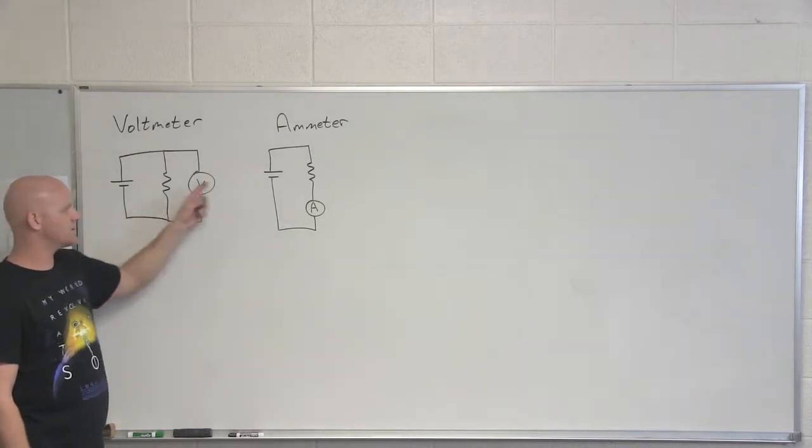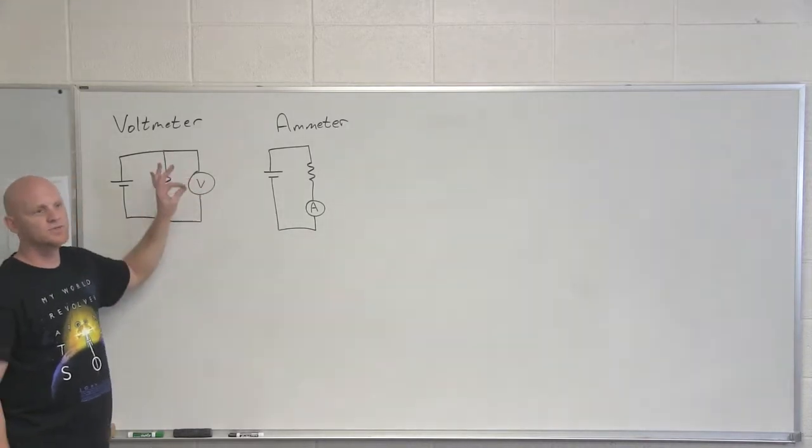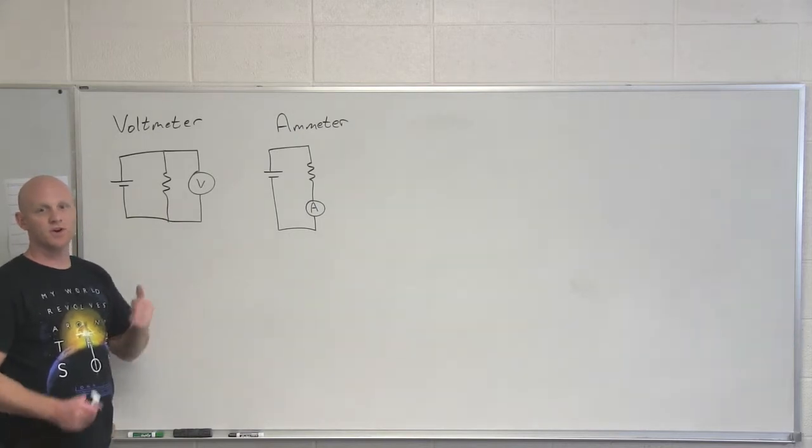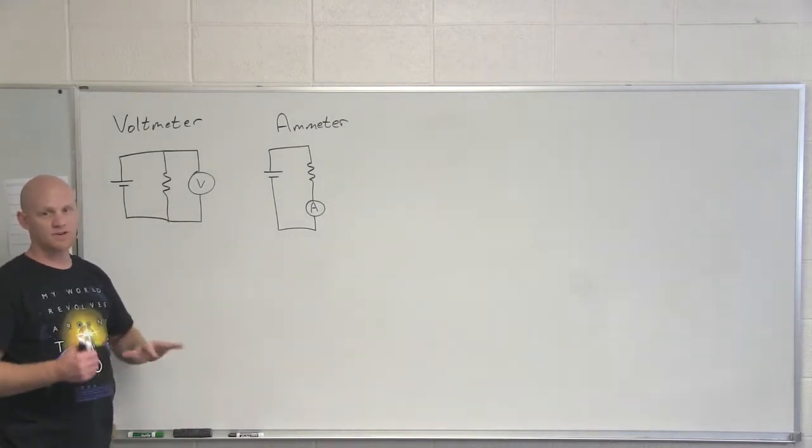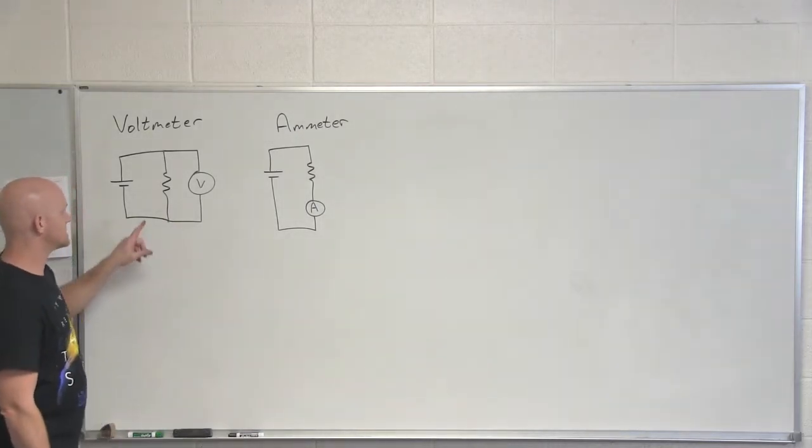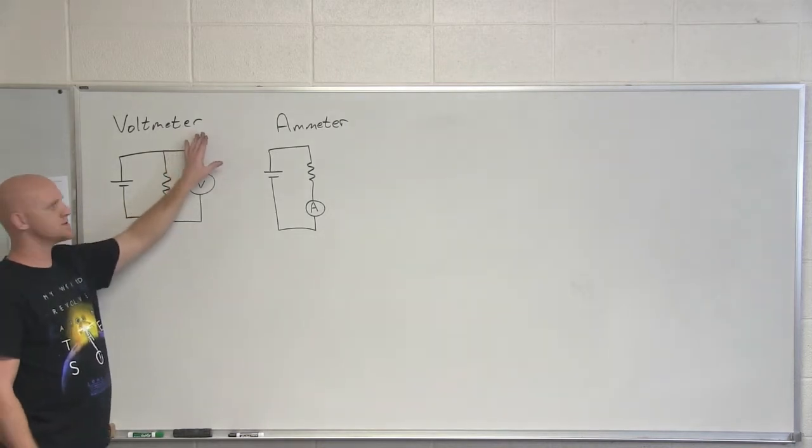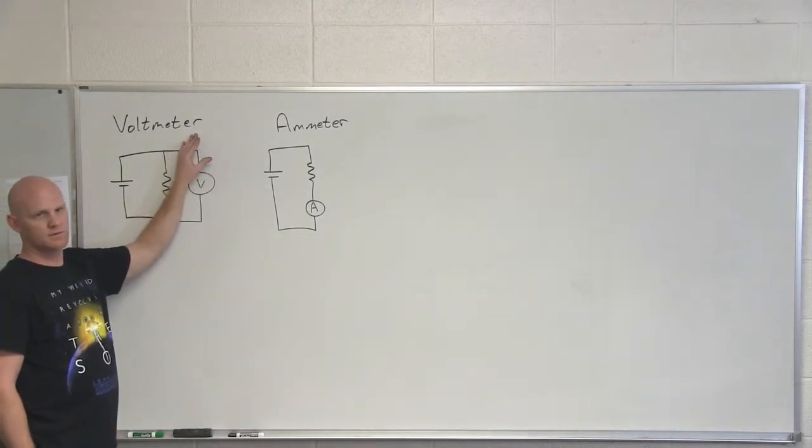The idea is that your voltmeter, your ammeter—either way—you don't want them to change the current flowing through the circuit in any appreciable way. So in this case, if this voltmeter wasn't here, where does the current flow through? The resistor.